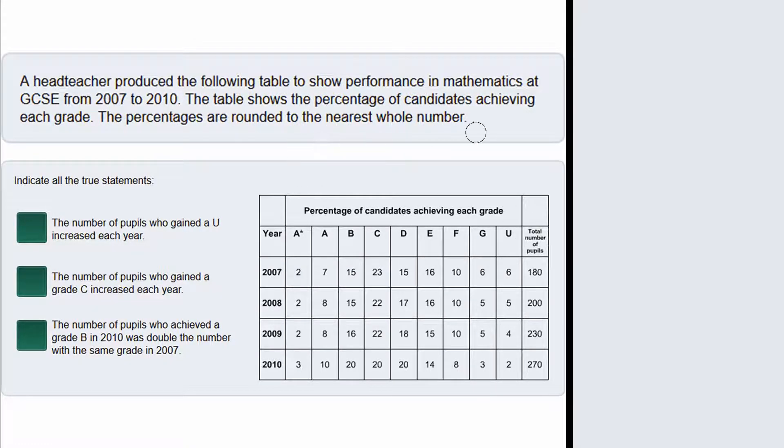In this question we are given this table that shows the percentage of candidates achieving each grade in their GCSE mathematics from 2007 to 2010. The percentages are rounded to the nearest whole number and we are asked to indicate all the true statements.